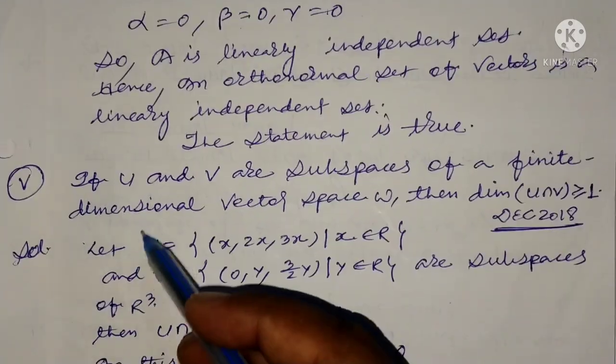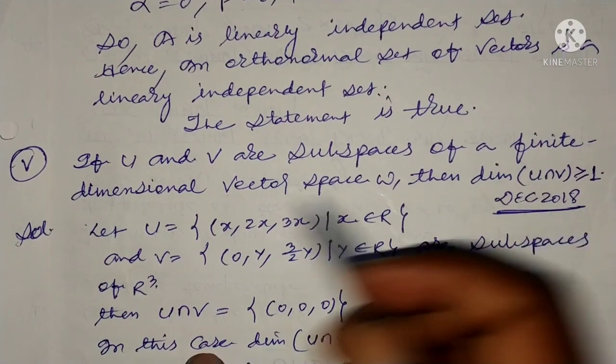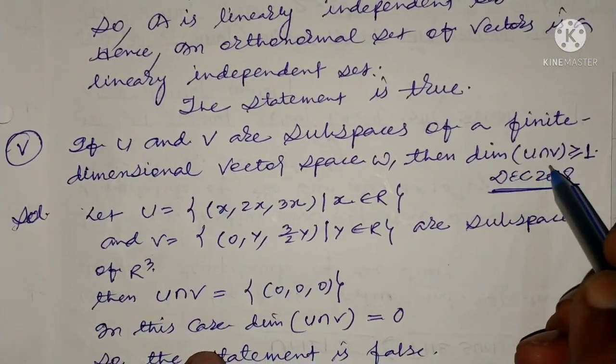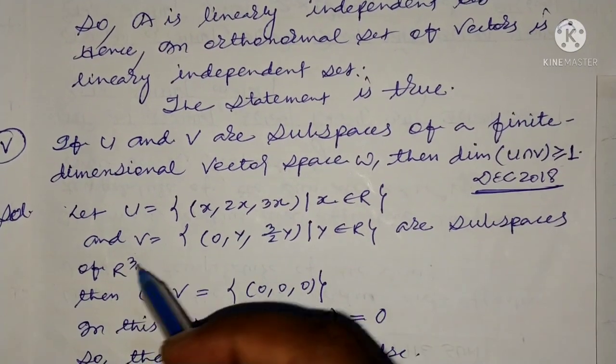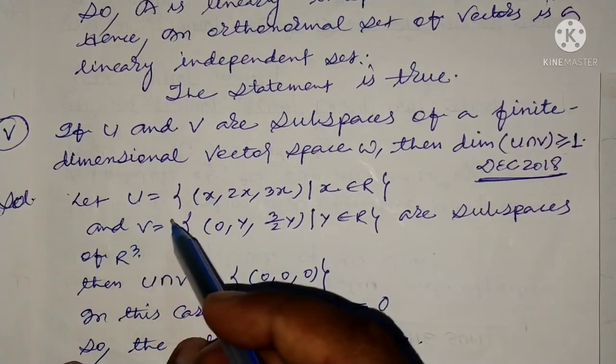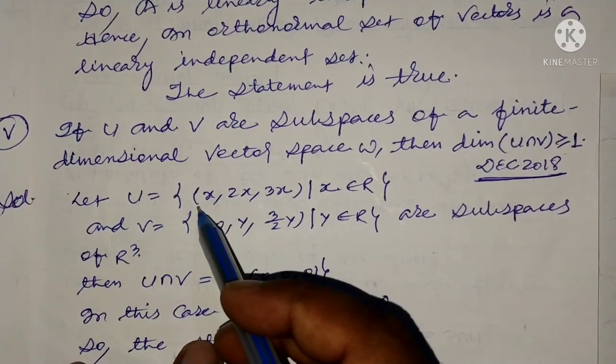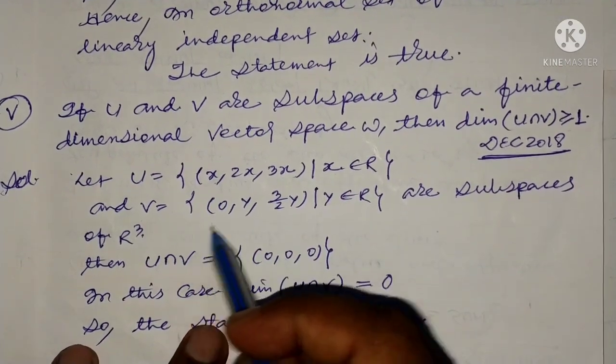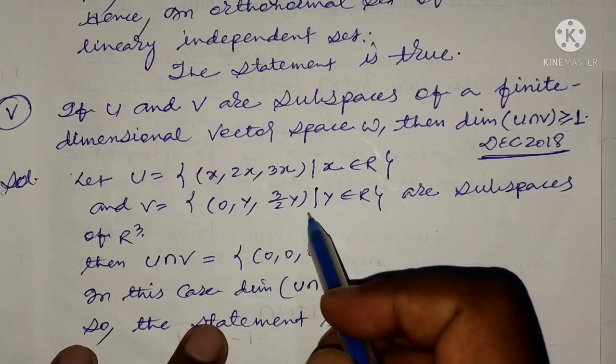Next: If U and V are subspaces of a finite dimensional vector space W, then dimension of U ∩ V ≥ 1. Let U equal the set of all vectors (x,x,3x) such that x belongs to R, and V equal the set of all vectors (0,y,3y/2) such that y belongs to R.